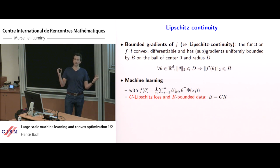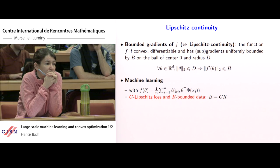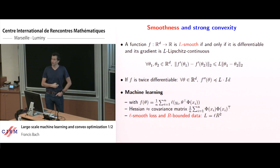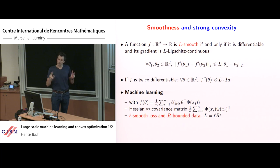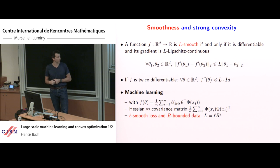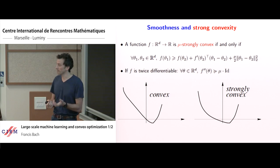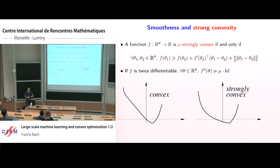Same thing for smoothness: if the loss l is smooth, like least squares or logistic, then the overall cost function is smooth. Smoothness is defined as having bounded second-order derivatives. These are weak assumptions. Much stronger is strong convexity — lower bounds on the Hessian. A convex function is not strongly convex if it has a flat part; a strongly convex function does not.